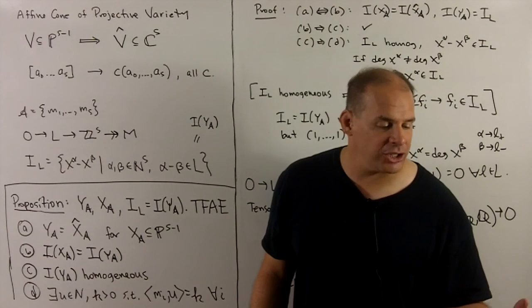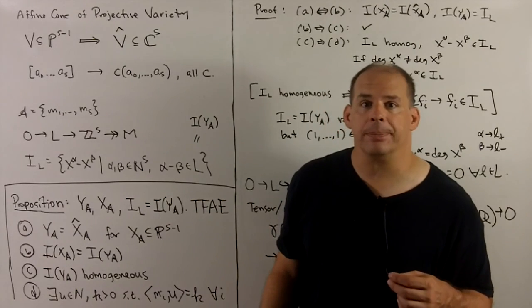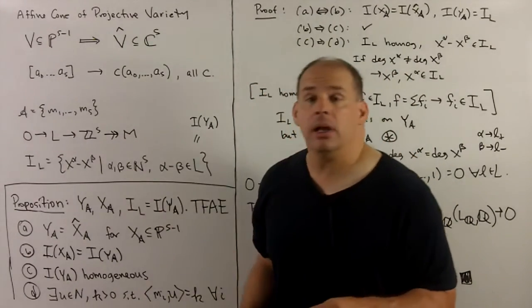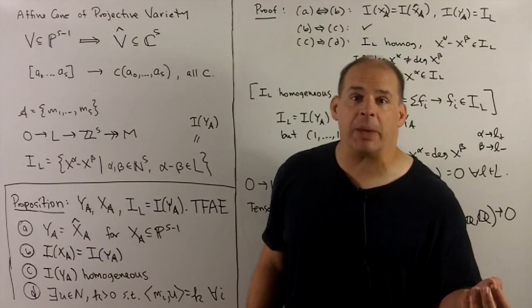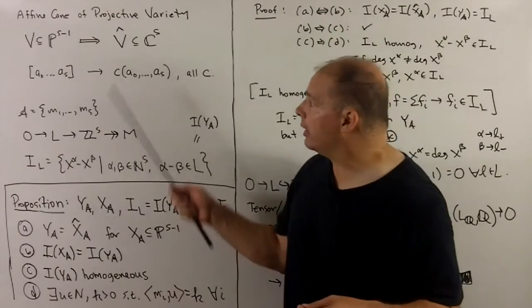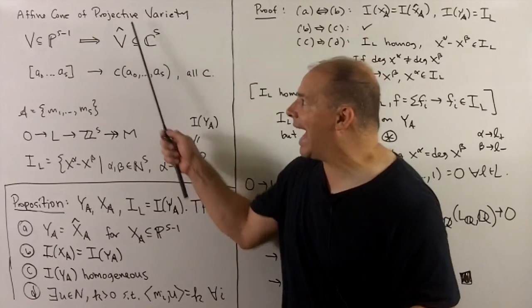In the other direction, if I have a projective variety, we can form the cone over that variety. If I take any point in the projective variety that corresponds to a line in the affine space, we take the union of all those lines, we get another affine variety, and that's what we call the cone over projective variety V, denoted by V hat.